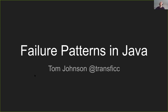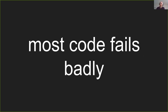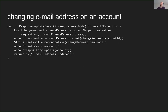Let's start off with a little bit of background. The problem we're trying to solve here is that most code fails - and that would be fine if it wasn't for the fact that most code fails badly. To illustrate what I mean, I've put together a fairly artificial example. Let's say we want to change an email address on an account. We get a request body from our web server, read it into a domain object, use that to get the account ID from the change request, look something up from a repository, canonicalize it, update the account with a new email, persist it, and return okay.